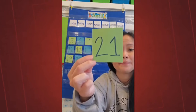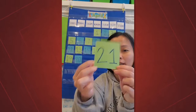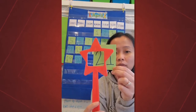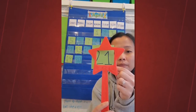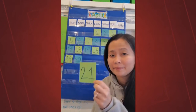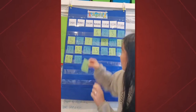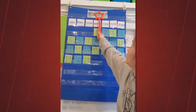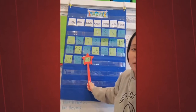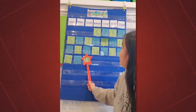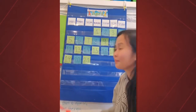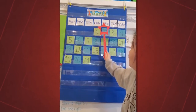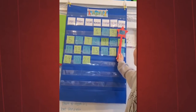Hi everyone, it's calendar time! Do you know what number this is? It has a 2 and a 1 — it's 21! Today is the 21st of April. April 21 is a Tuesday.